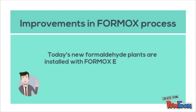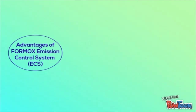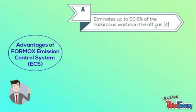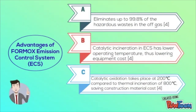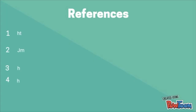Today's new formaldehyde plants are installed with the formox emission control system. The EMS feature eliminates hazardous wastes in the off-gas through catalytic incineration and catalytic oxidation. The ECS has a lower operating temperature, therefore it saves equipment cost.